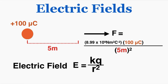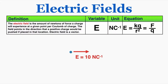The electric field, capital E, is equal to the Coulomb constant times the charge creating the electric field over the distance from the charge to the point we're measuring the field strength at, squared. Those numbers specifically are the electric field strength. The electric field is the amount of newtons of force a charge will experience at a given point per coulomb of charge. The field points in the direction that a positive charge would be pushed if placed in that location, and the electric field is a vector.